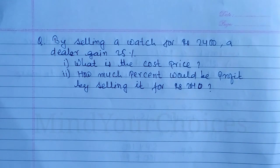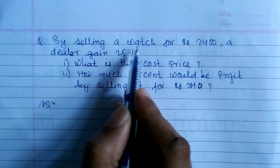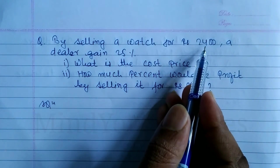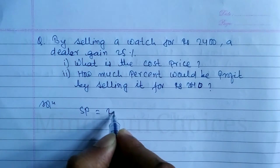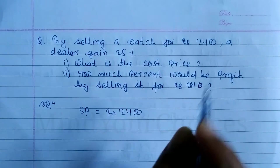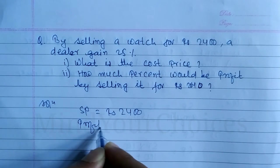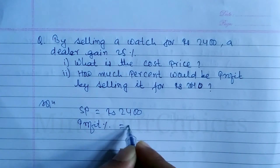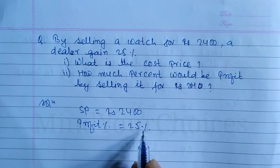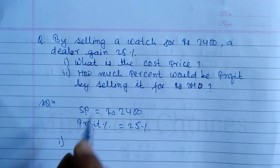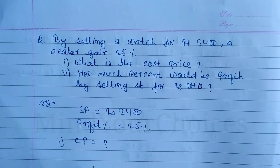Question from Class 8 Profit and Loss. By selling a watch for Rupees 2400, the dealer gains 25% profit. The selling price SP of the watch is Rupees 2400 and profit percent is 25%. The question asks: what is the cost price of the watch? We need to find CP.